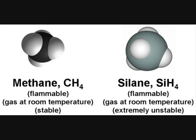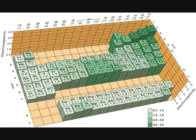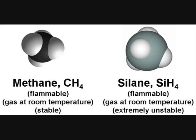However, there are many differences. Silicon is less electronegative than carbon. So whereas methane has a slight positive charge on the hydrogen atoms and a slight negative charge on the carbon atom, the partial negative charge is on the hydrogens in silane, with a positive charge on the silicon atom.